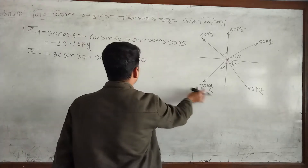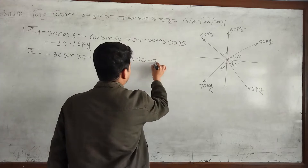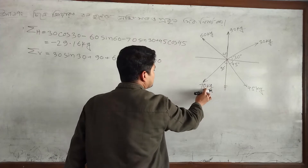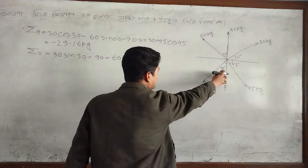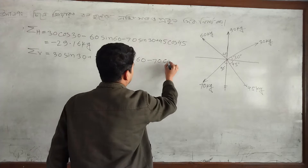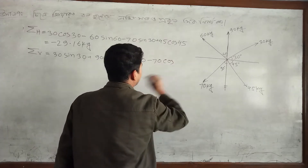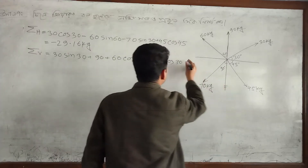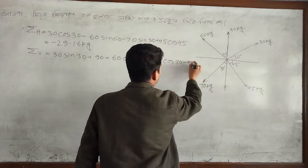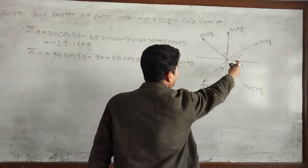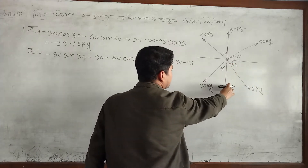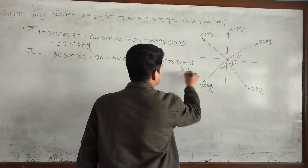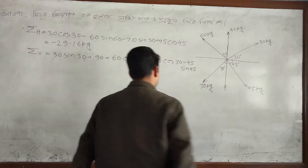70 kg force — what degree is 60? Minus 70 vertical force. 30 degree vertical is greater. 70 cos 30 degrees. 45 minus 45 — vertical component: 45 sin 45 degrees.